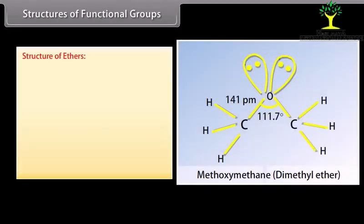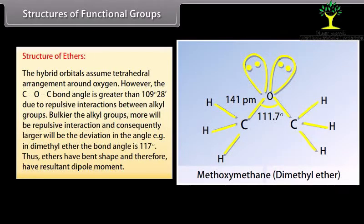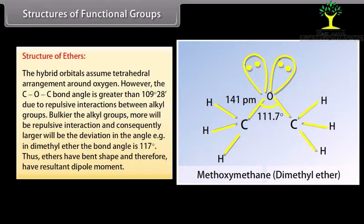Structure of ethers: the hybrid orbitals assume a tetrahedral arrangement around the oxygen. However, the C-O-C bond angle is greater than 109°28' due to repulsive interactions between the alkyl groups. Bulkier alkyl groups result in more repulsive interaction and consequently a larger deviation in the angle. For example, in dimethyl ether the bond angle is 117°. Thus, ethers have a bent shape and therefore have a resultant dipole moment.